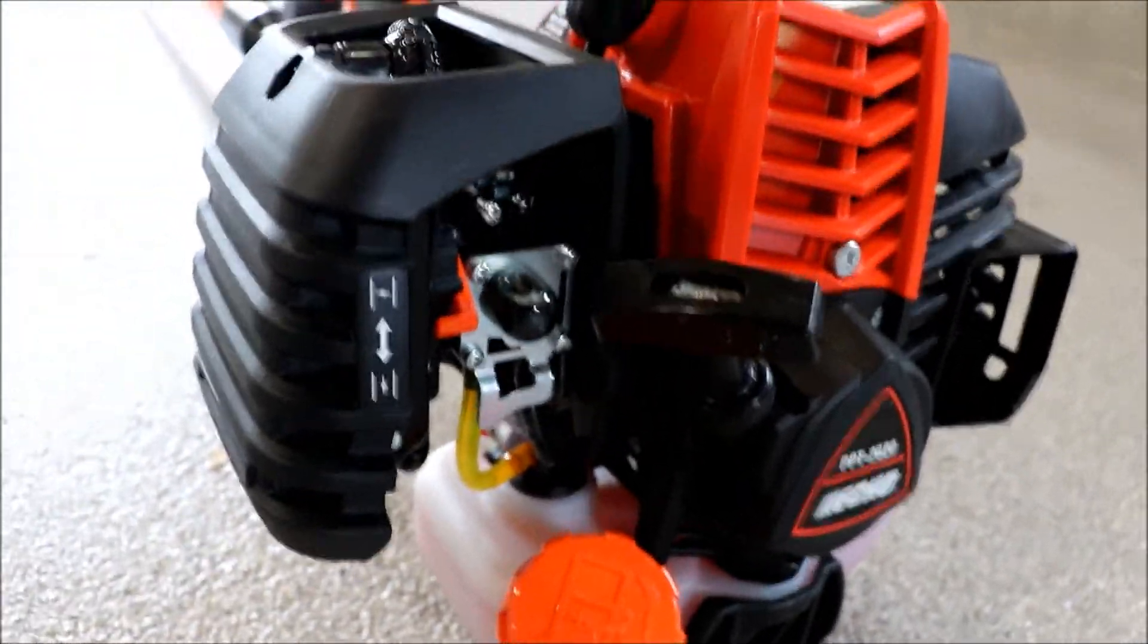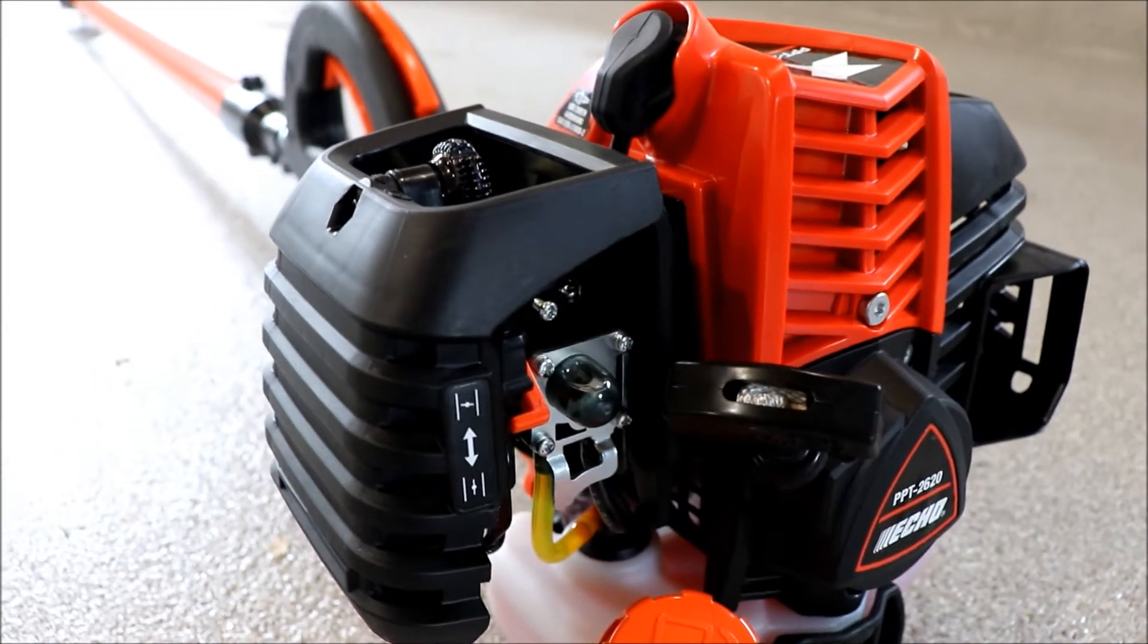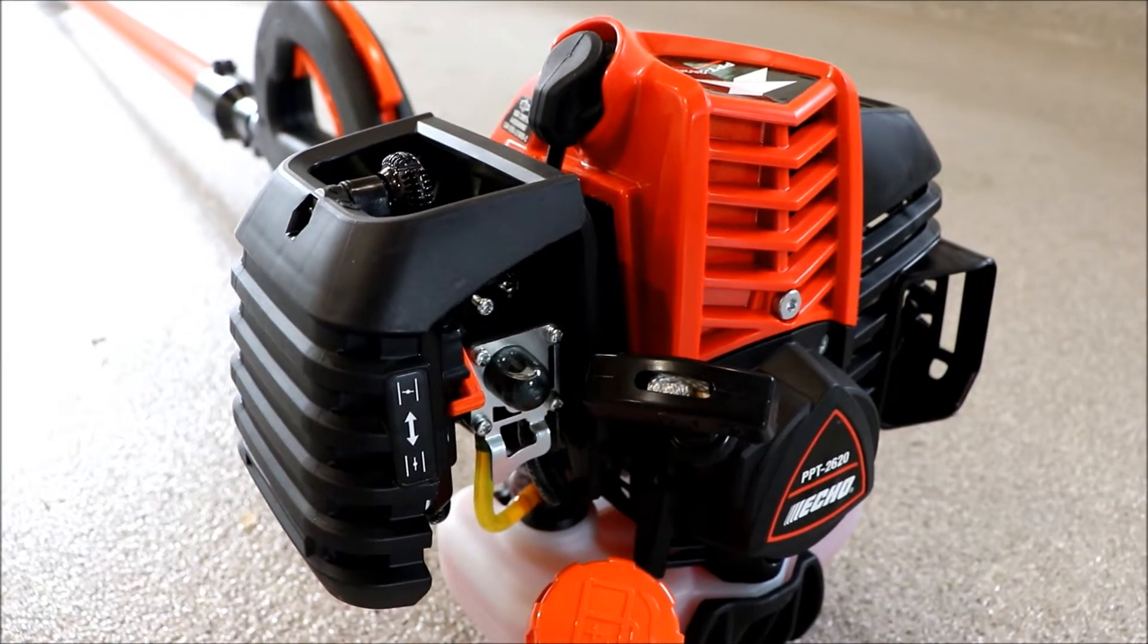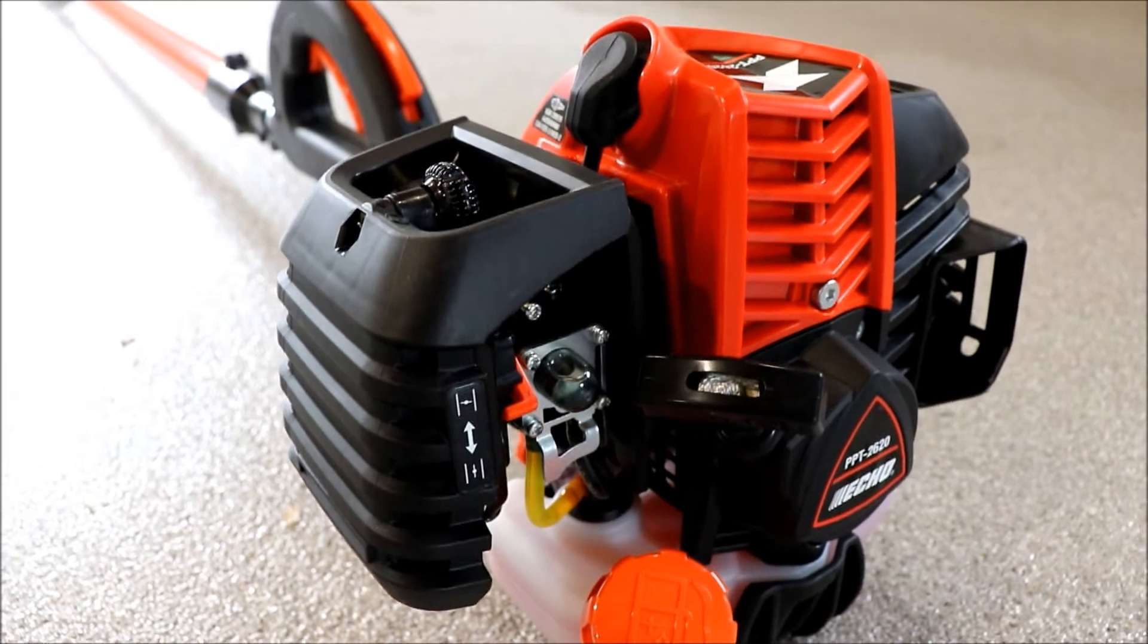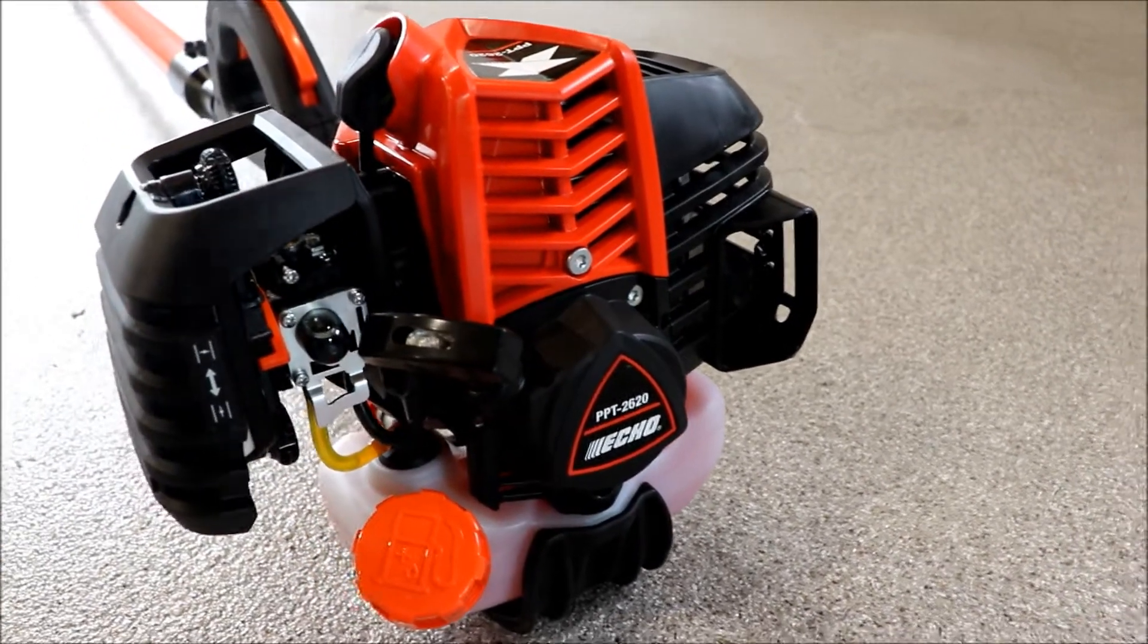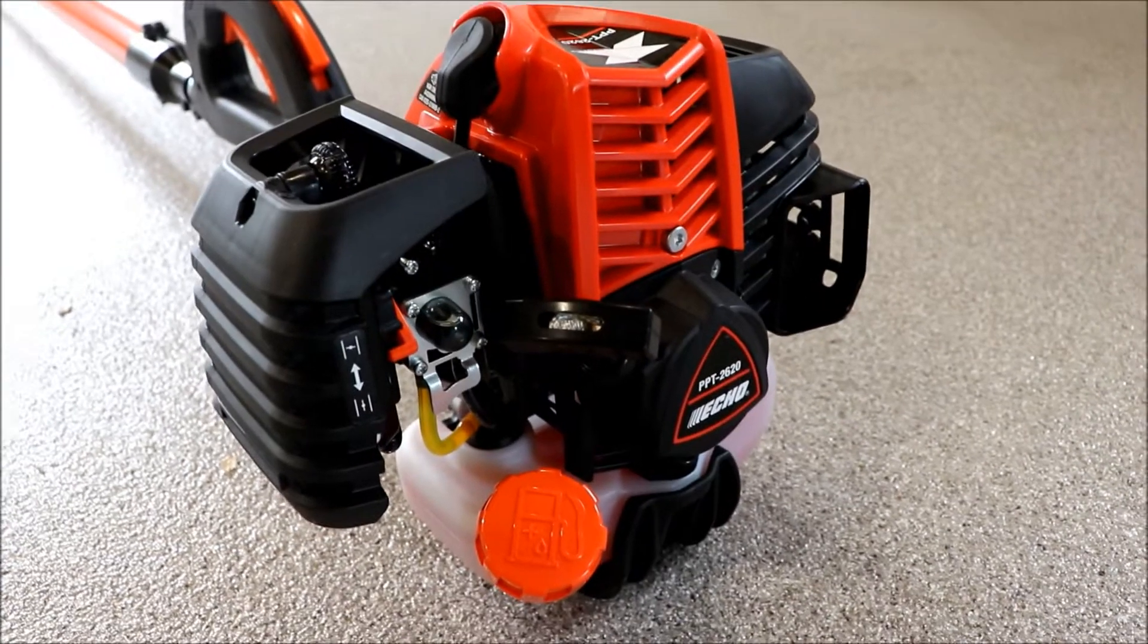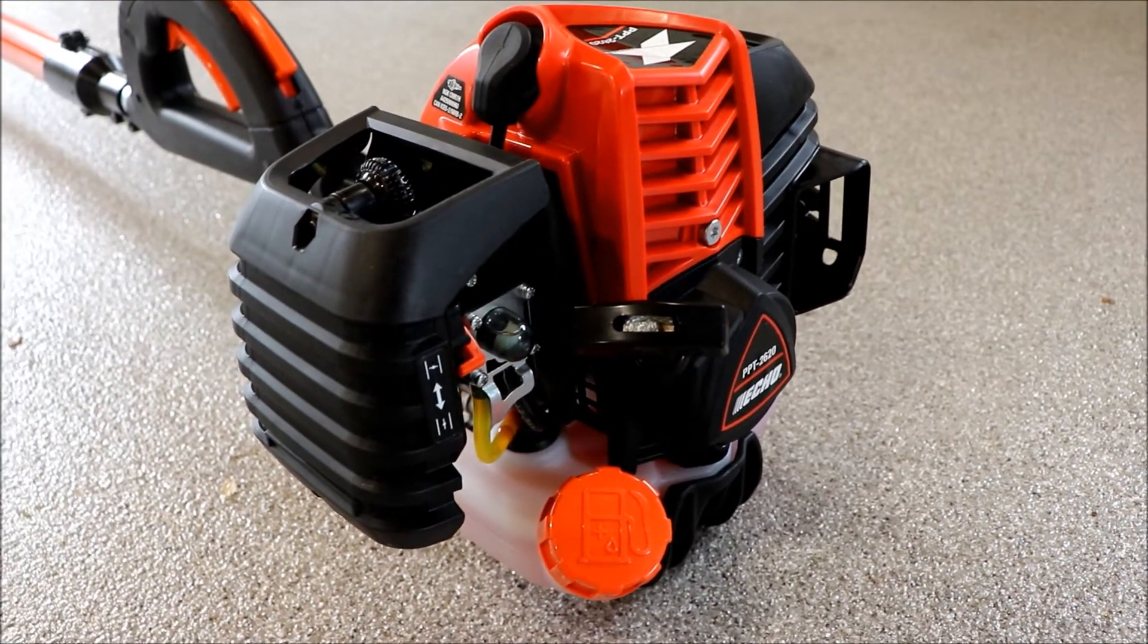You got the choke in the back here. There's a primer bulb. You get your pull start. I think I only pulled it once when I used it. It started up right away. I don't even know if you need to prime it. I primed it a few times, but like I said, it fired right off. And this is the first like a weed whacker size engine I've had from ECHO. I had a couple chainsaws that I liked. So that's kind of why I went with the ECHO brand.